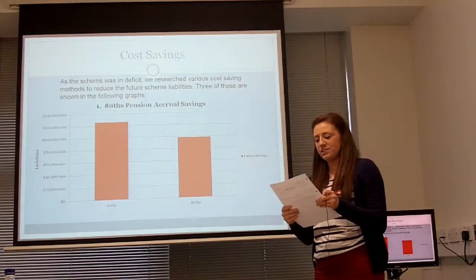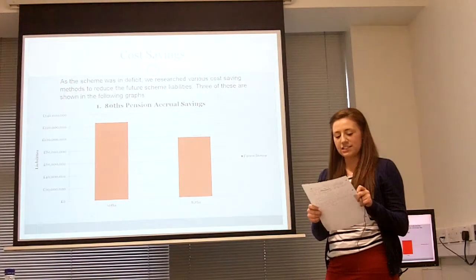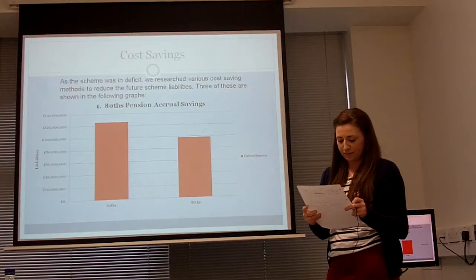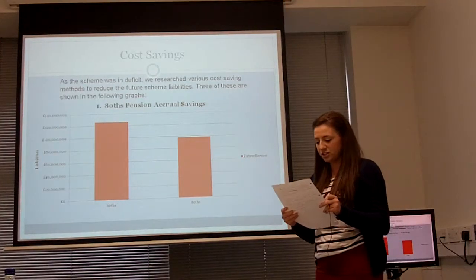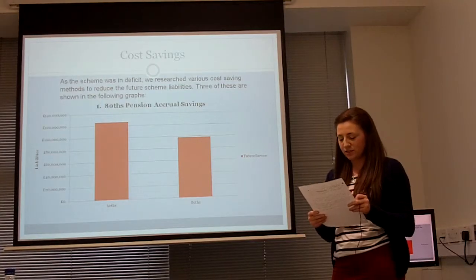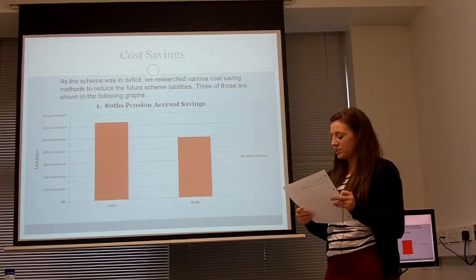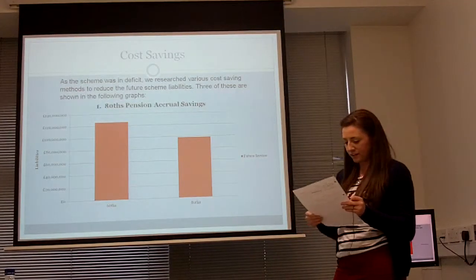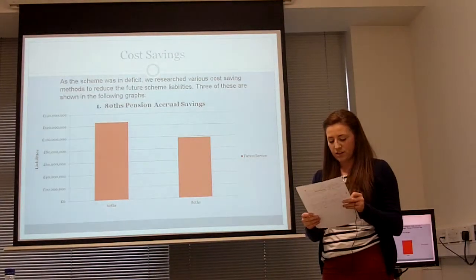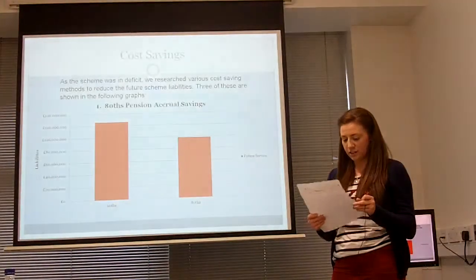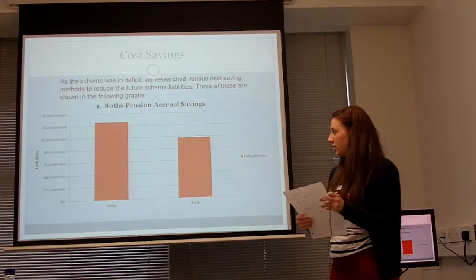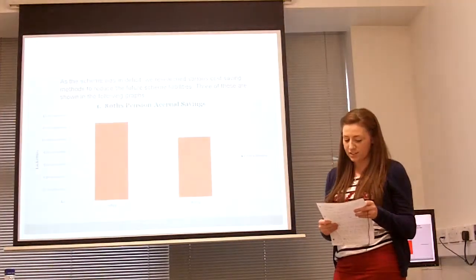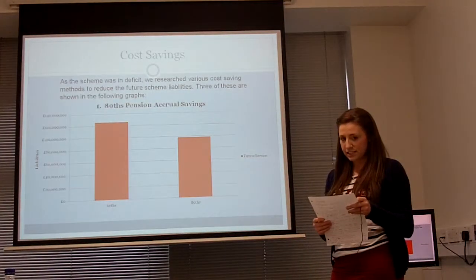As Olivia stated, the scheme has a deficit of £24,076,960. In order to reduce this deficit, there are various ways of reducing the liabilities of the scheme. One possible cost saving method is to change the accrual rates from 60ths to 80ths. This change will affect the future liabilities of the active members. As you can see from the graph, the liability is reduced from over £126 million to approximately £98 million, a reduction of 22.4%. The deferred members and pensioners are not affected. However, it is proving to be very unpopular with scheme members, and many employees are protesting and even striking.